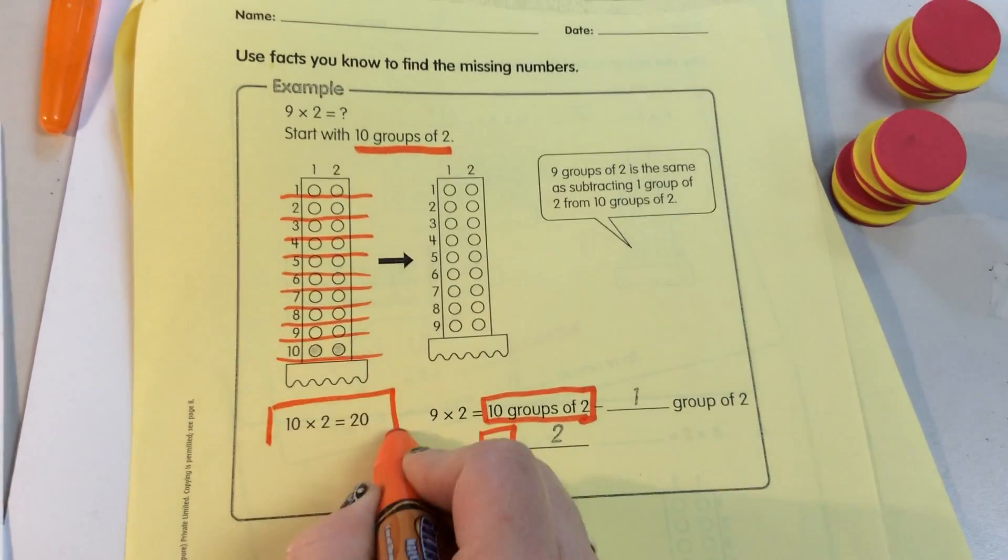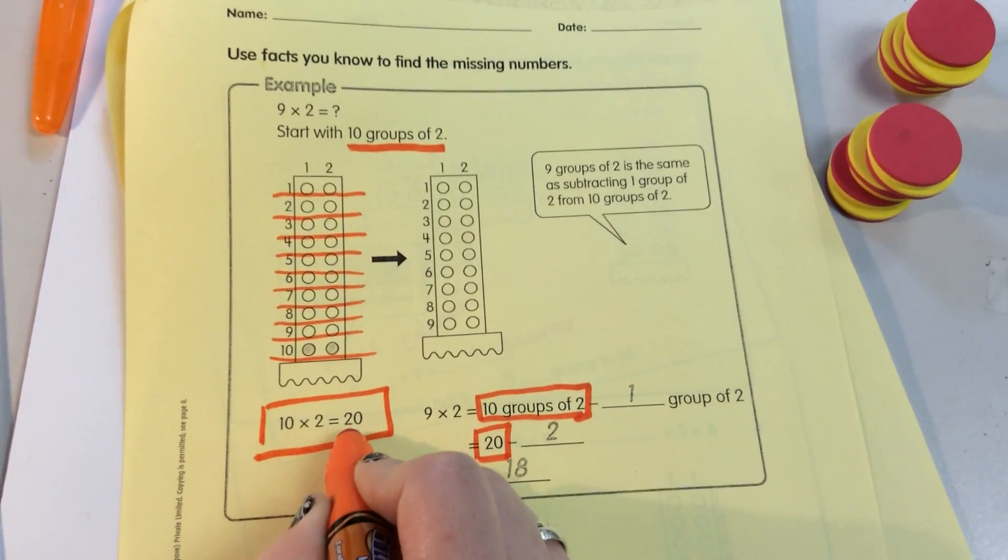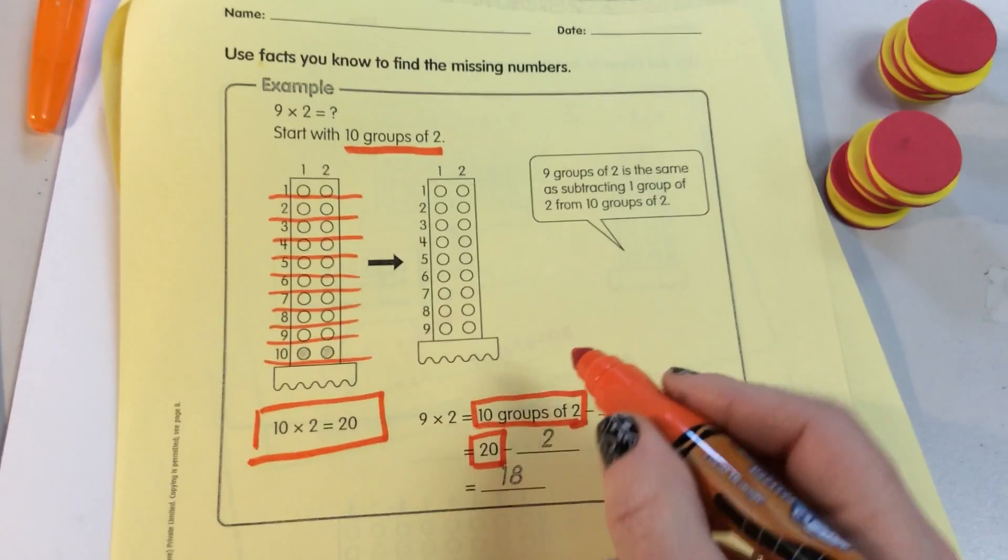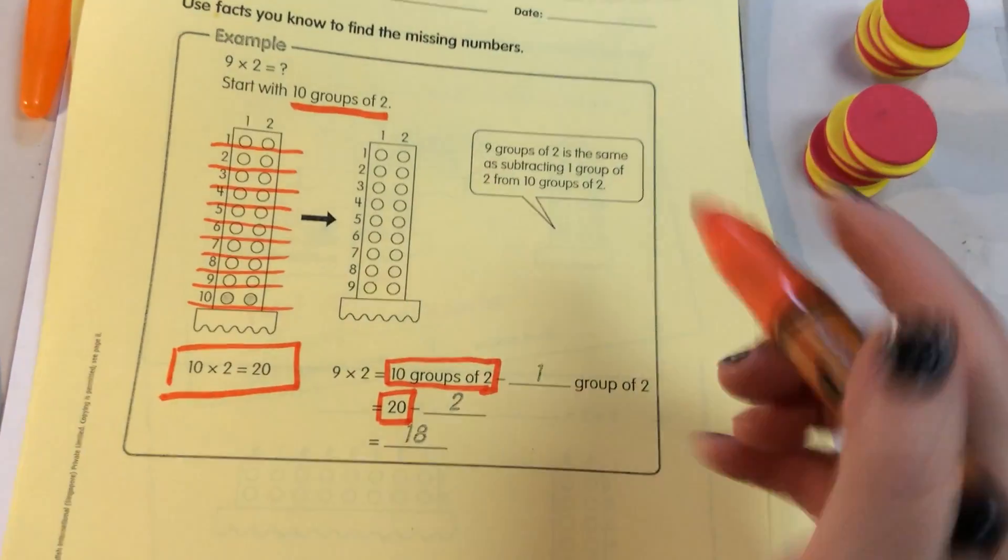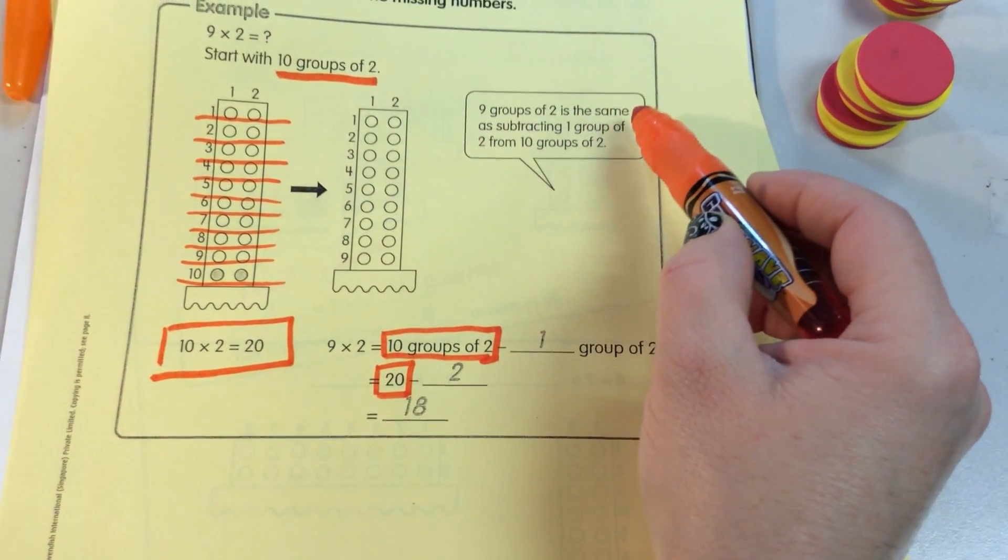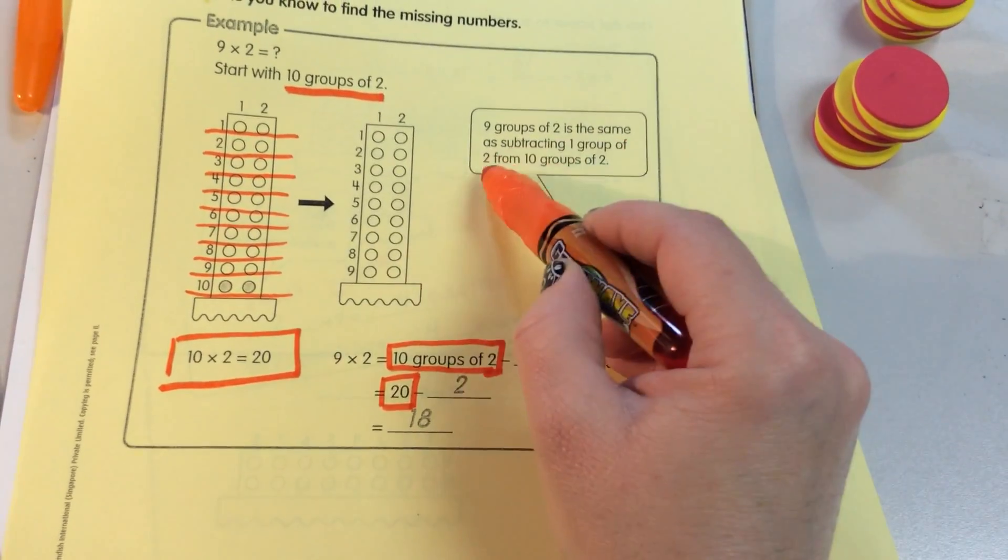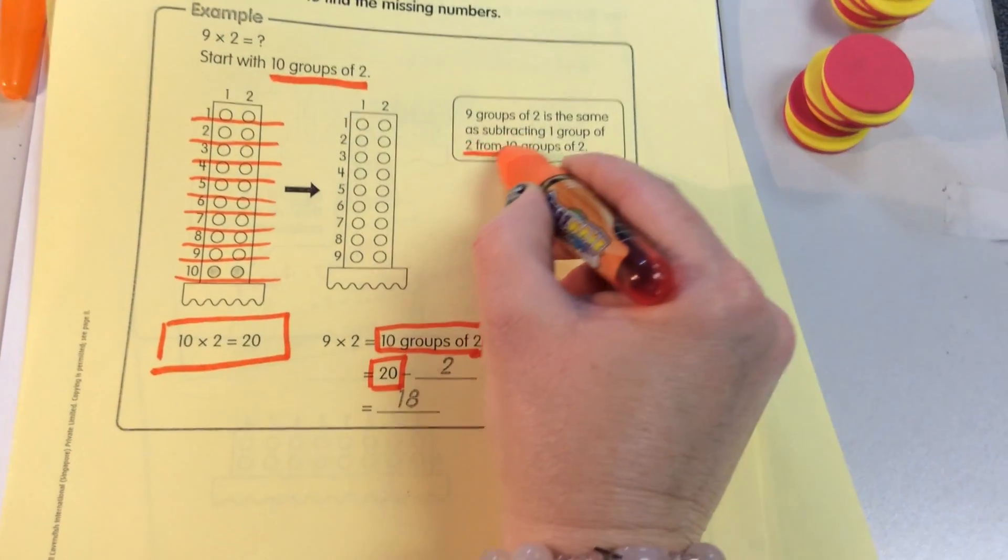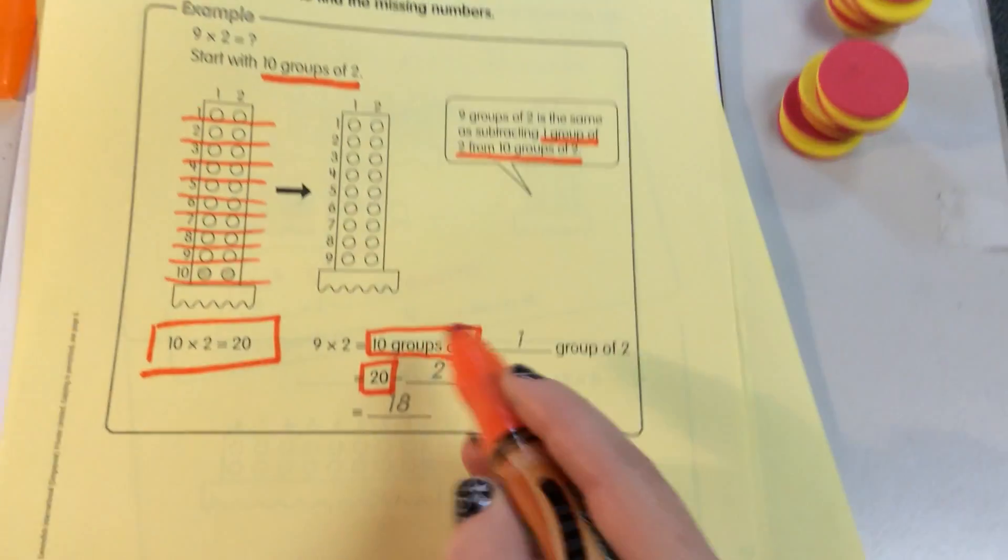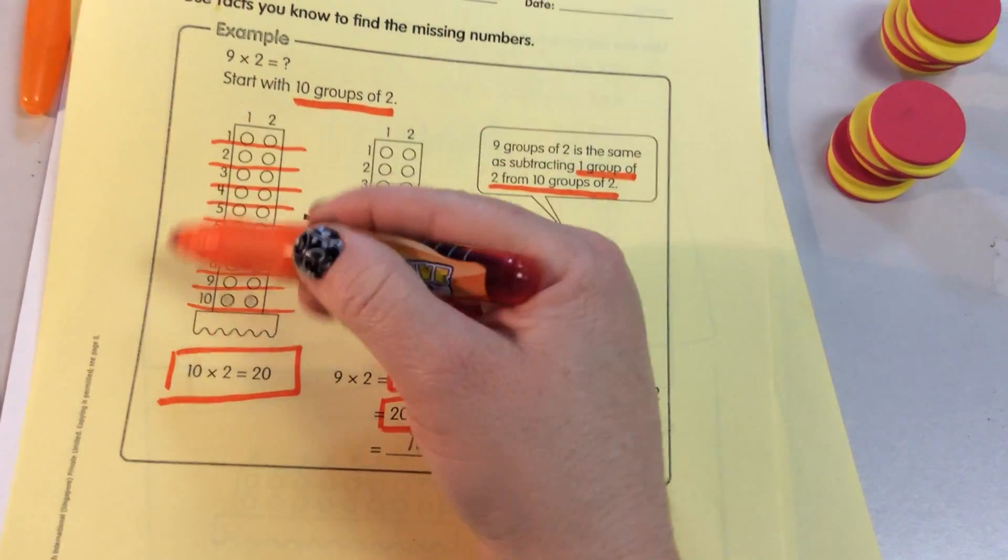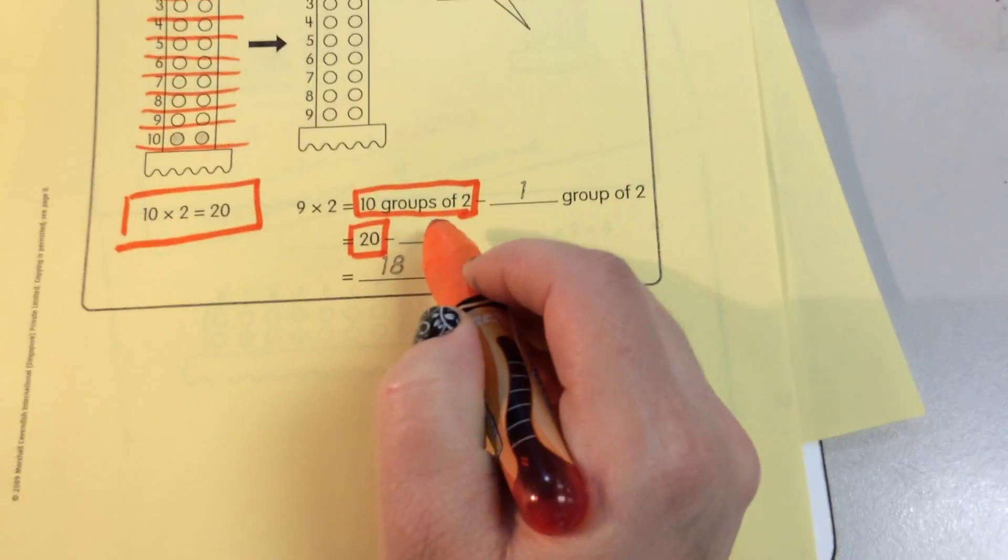So we know there's 10 groups. Each one has 2. So it's equal to 20. Then it says that 9 groups of 2 is the same as subtracting 1 group of 2 from 10 groups of 2. Because we know easily that 10 groups of 2 is equal to 20, we have that.